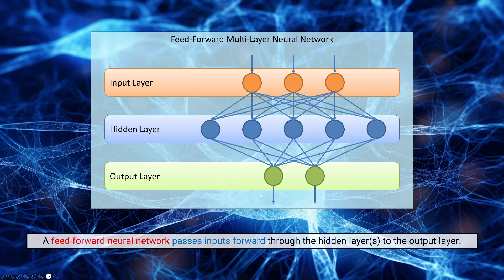This is in contrast to other networks, specifically ones called recurrent networks, where you may have connections that don't just go forward in the network but also go backwards. Those are used for different things and are a slightly more complicated operation, because you can't just simply process the inputs in order of the layers as we have here.